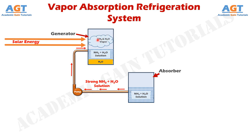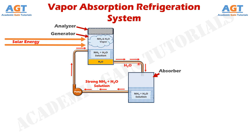We also have an analyzer inside this generator. When this vapor of ammonia and water is passed through this analyzer, the analyzer sends the water vapor back to this generator, and it only lets the ammonia vapor pass through. Then from this generator, the residue of water vapor accumulated here will be passed back to the absorber again through this connecting pipe.